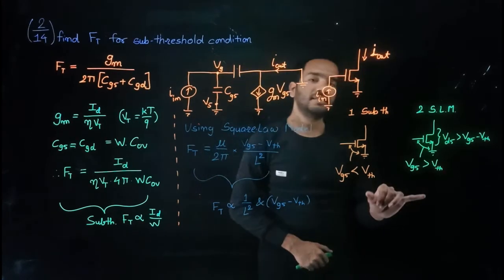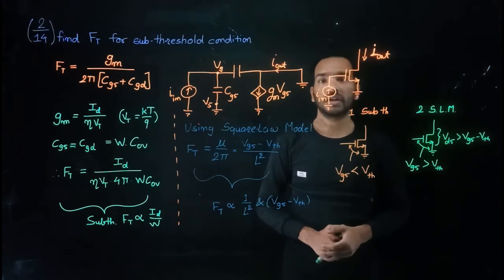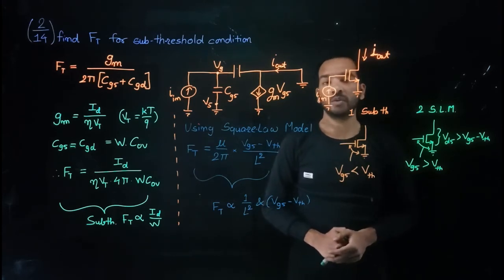So while designing, you need to take care. If your Vgs is less than Vt, your Ft is proportional to id over width.